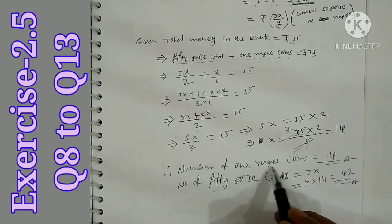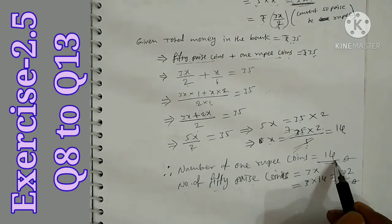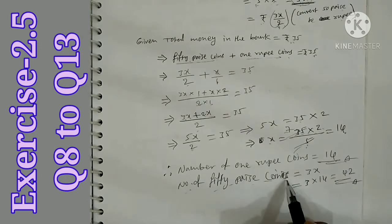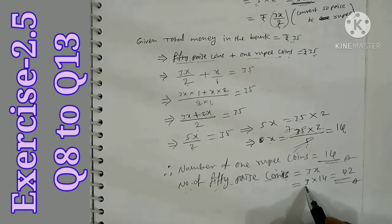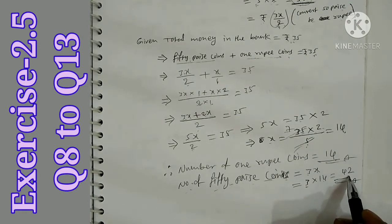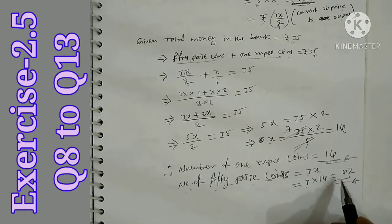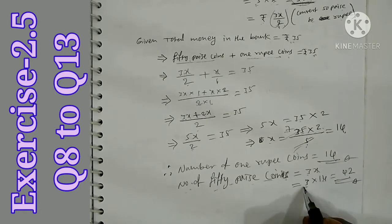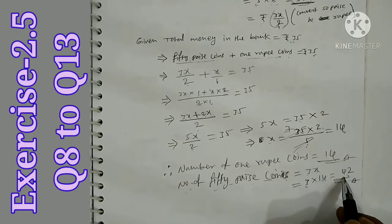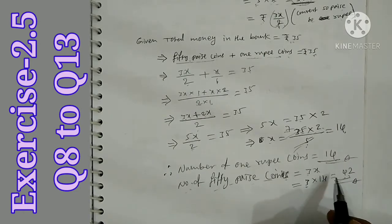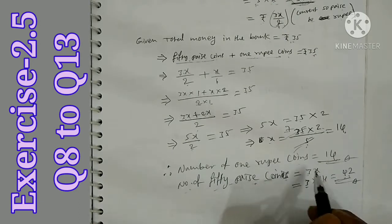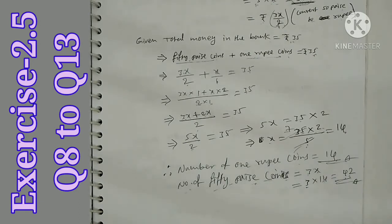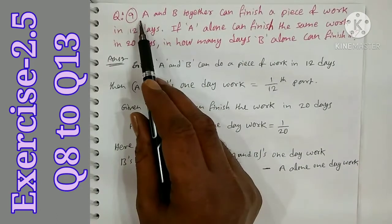So the number of 1 Rupee coins is 14. Number of 50 Paise coins is 3 into x, that is 3 into 14, which equals 42. So there are 42 fifty-paise coins and 14 one-rupee coins in Aravind's kiddie bank. Question number 9.